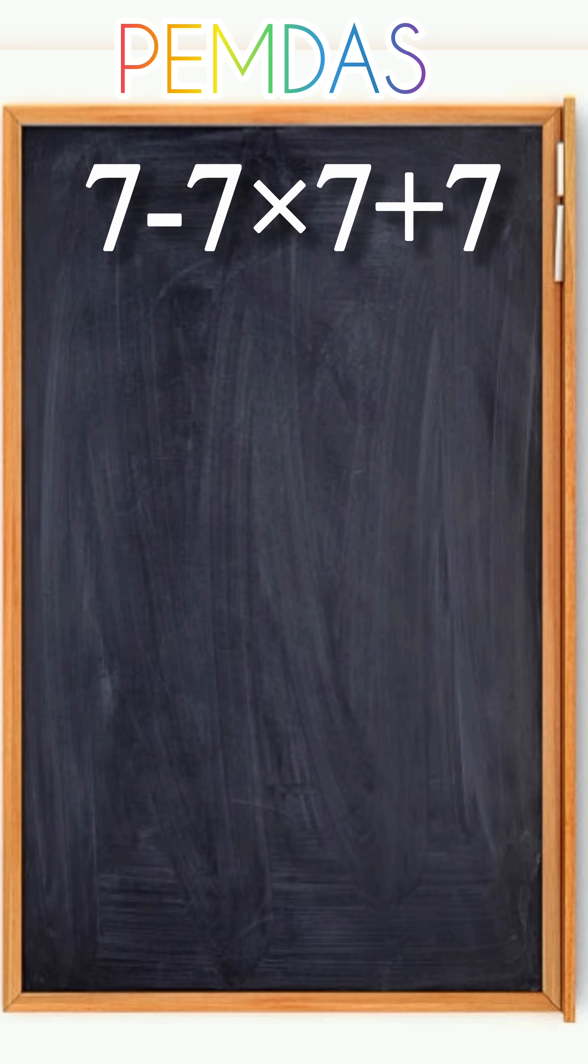7 minus 7 multiply 7 plus 7 looks simple, right? But depending on how you solve it, you might get 0, 7, or even minus 49. If you got any of those, don't worry—you are not alone. Let's see what happens and then we'll finally get it right.